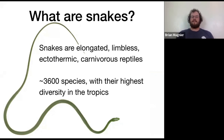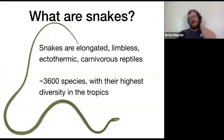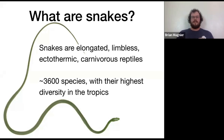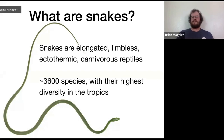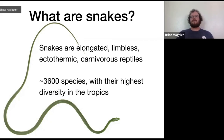Snakes always have a relatively long body plan — they're always elongate. They do not have any limbs, though we'll look at a fossil snake that gives us evidence of how they went from having limbs to what we know today. Ectothermic: 'ecto' means outside, and 'thermic' relates to heat, so they get their heat from outside their bodies. We used to say cold-blooded, but now we use ectothermic and endothermic. And carnivorous — there are no vegetarian snakes eating plants as their main diet.